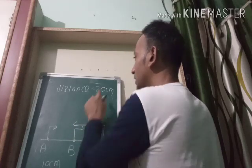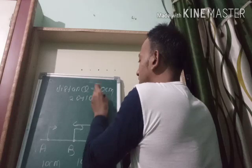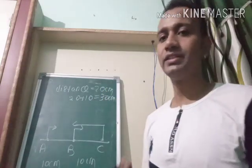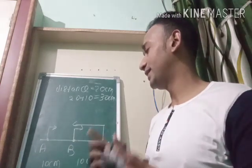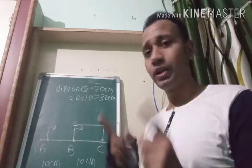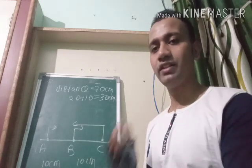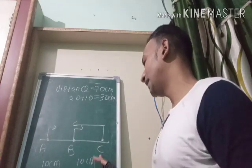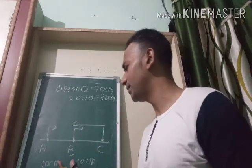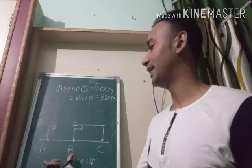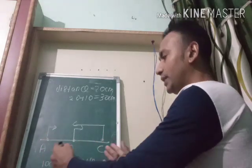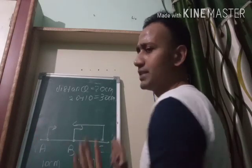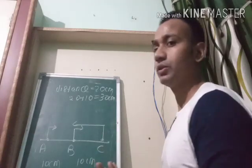So distance is the actual length of the path travelled. Now what is displacement? Displacement is the shortest distance between the initial position and the final position. We started from A, went to C, and then came back to B. The initial point is A and the final point is B. The shortest distance between A and B is 10 cm, so the displacement is 10 cm.